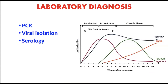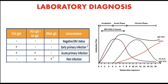For laboratory diagnosis of EBV, you can perform PCR, viral isolation, or serology. To interpret EBV antibody tests: if there is no IgM for VCA, no IgG for VCA and EA, and negative EBNA IgG, the patient is considered susceptible to EBV infection — they have no antibodies.